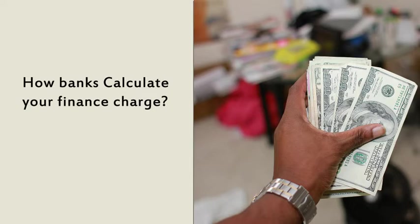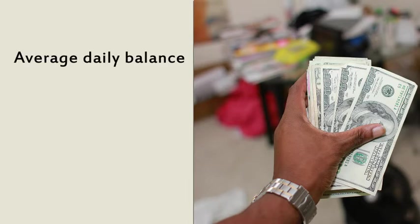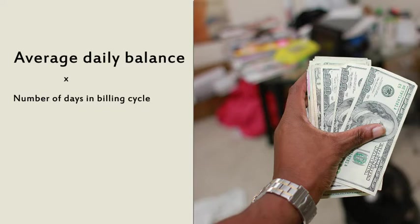We basically start with your average daily balance. They use the average because it's more beneficial to them, so you can't just pay something off and expect to have a zero finance charge. You take your average daily balance, multiply it by the number of days in the billing cycle — which will be on your statement — and finally multiply that by your daily percentage rate, which is your annual percentage rate converted to a daily number.